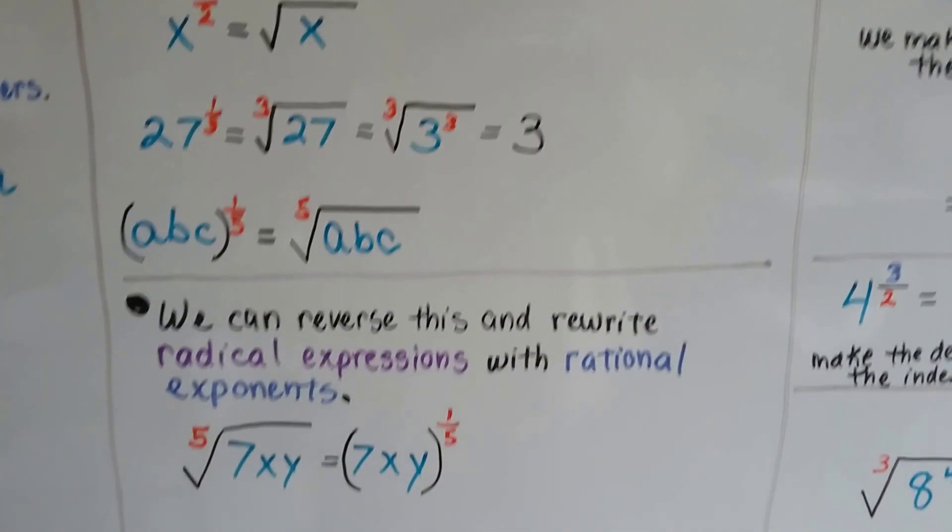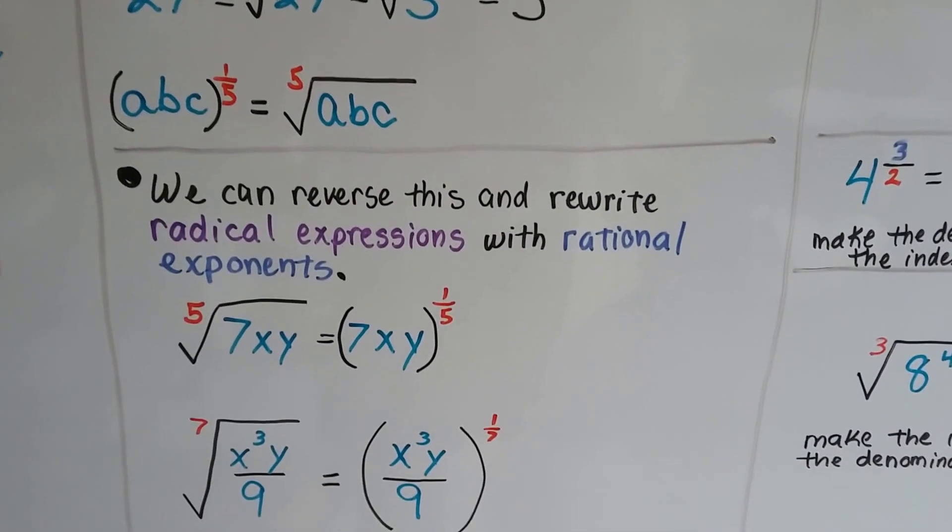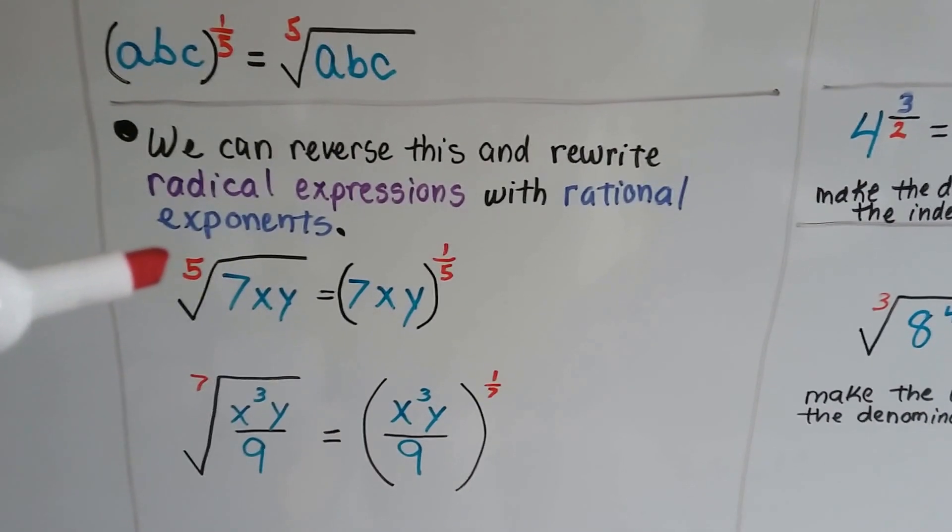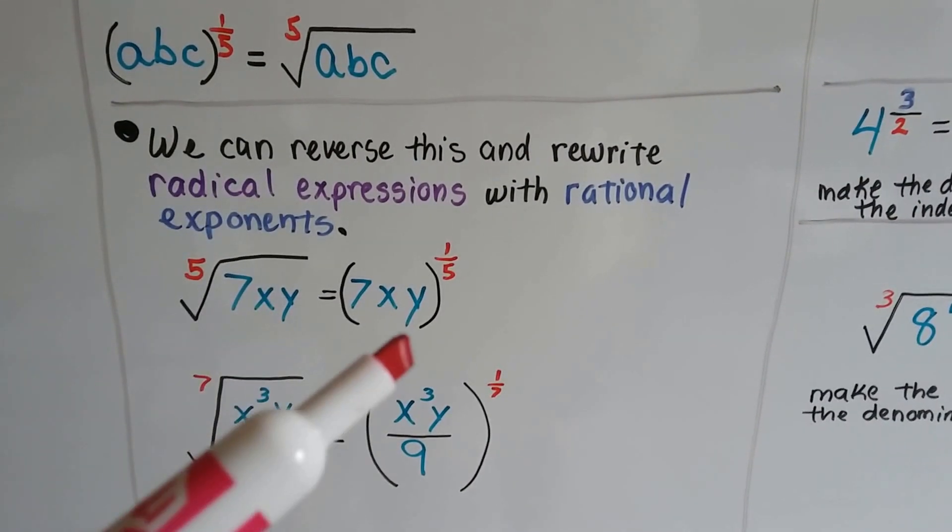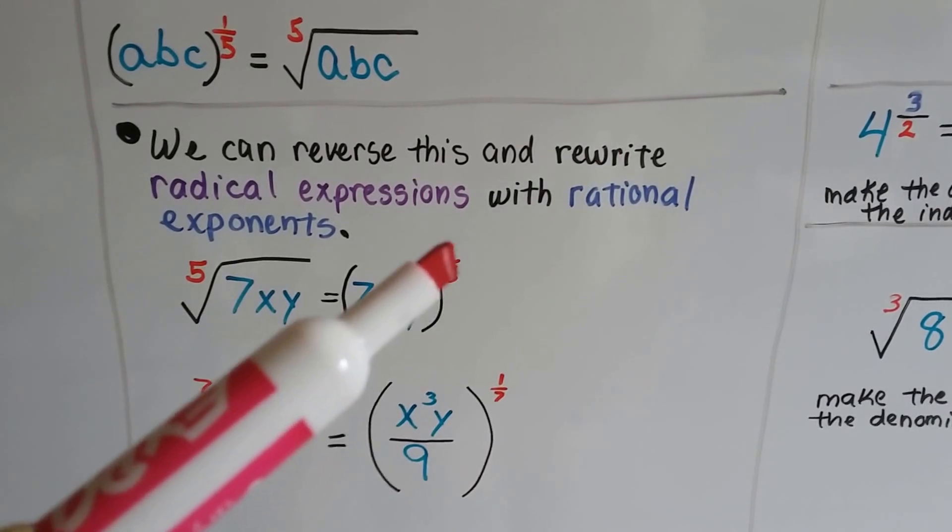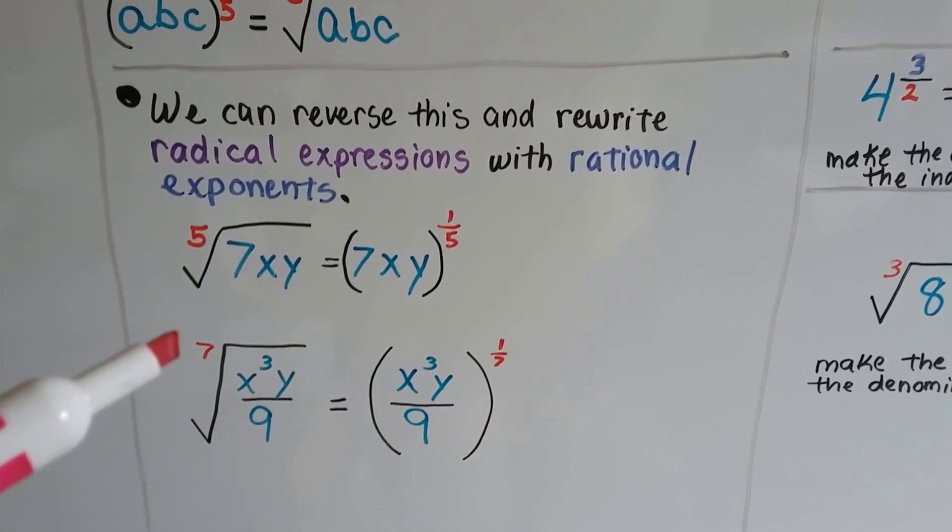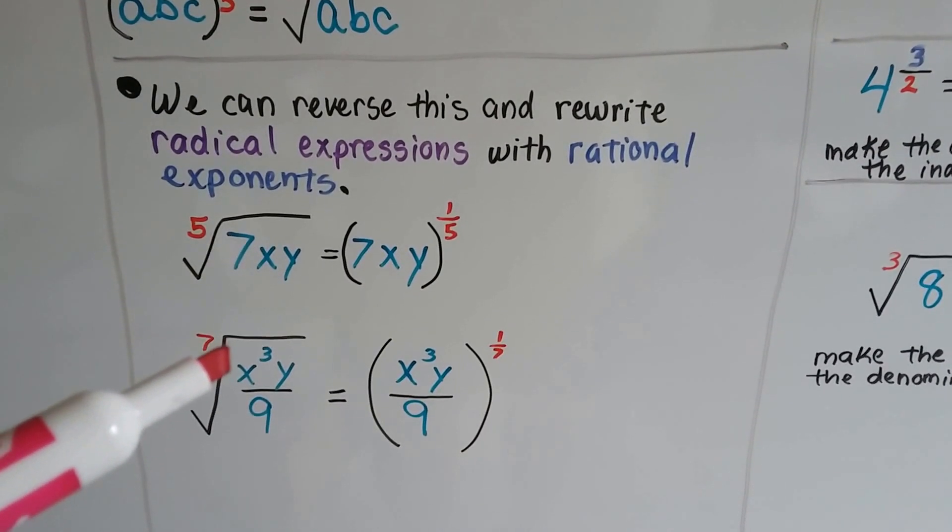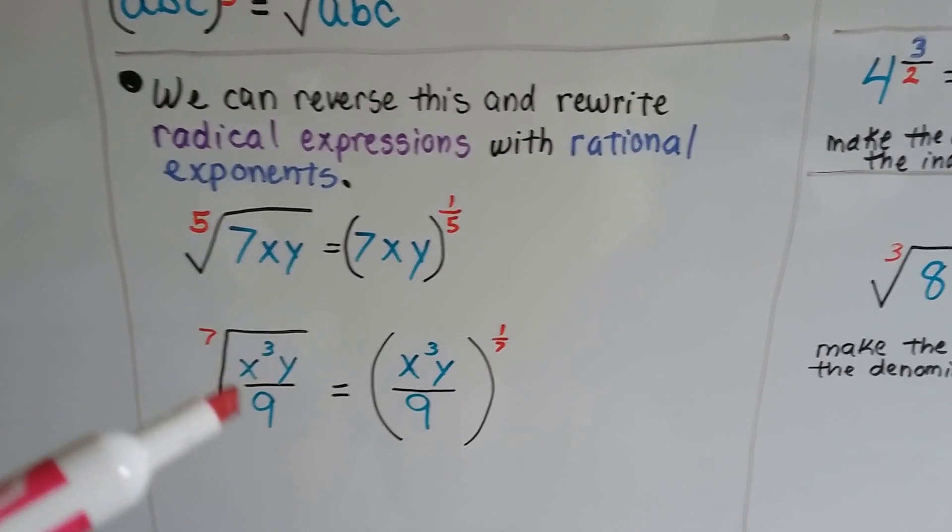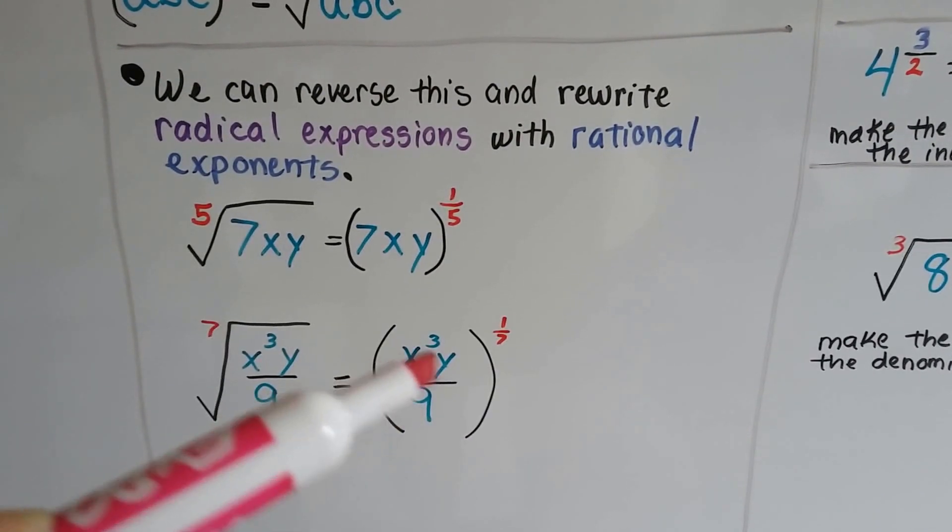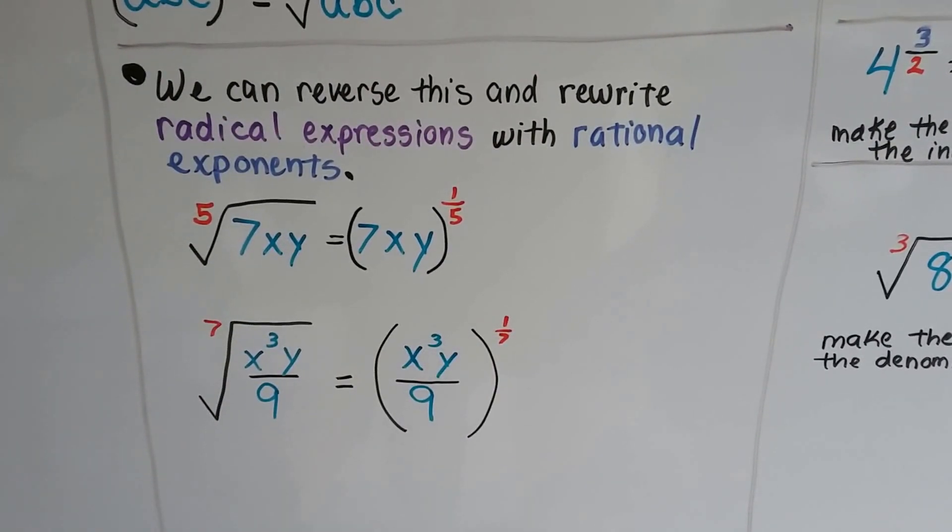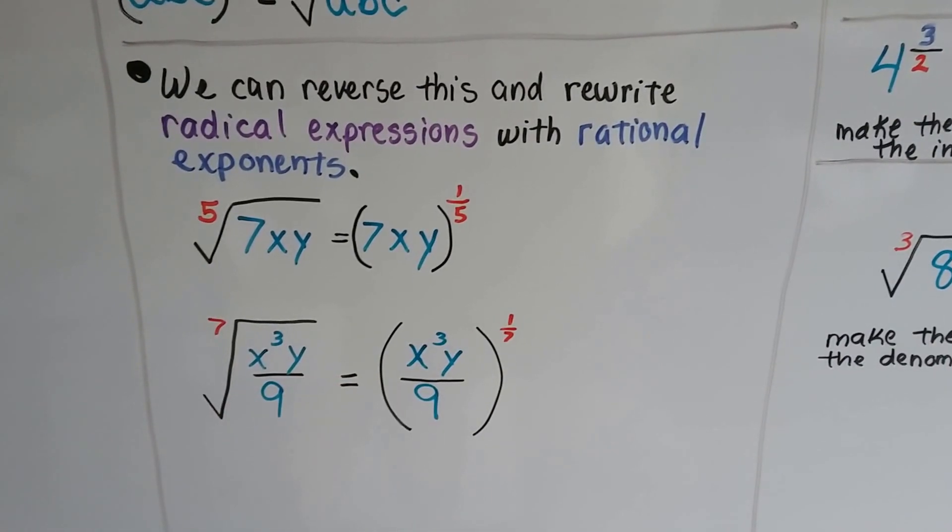We can reverse this and rewrite radical expressions with rational exponents. If we've got the fifth root of 7xy, we can write it to the one-fifth power. If we've got the seventh root of the quotient of x to the third y and 9, we can write it to the one-seventh power.